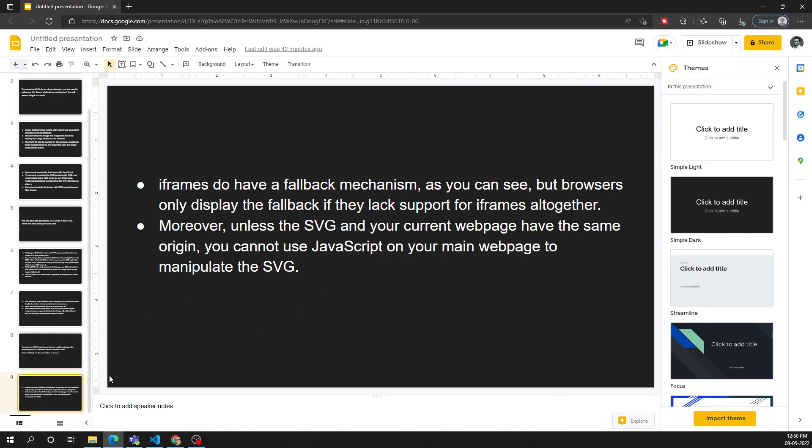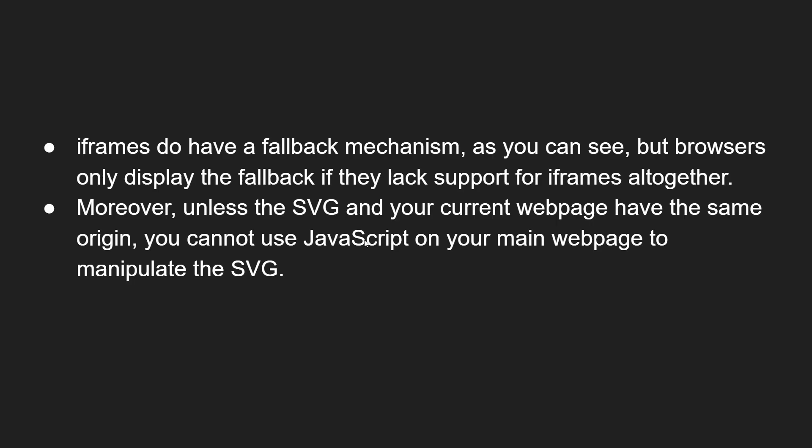With the iframe method, we have more disadvantages than advantages. Iframes do not have a fallback mechanism — the browser only displays a fallback if the browser lacks support for iframes altogether. The img element, by contrast, supports fallback via srcset attributes. Moreover, unless the SVG and your current web page have the same origin — same domain — you cannot use JavaScript in your main web page to manipulate that SVG file. Cross-origin restrictions apply, making this method problematic.